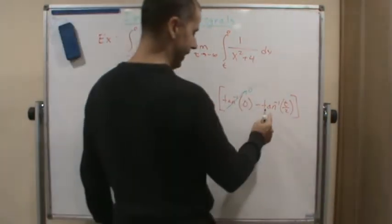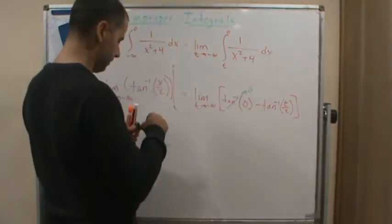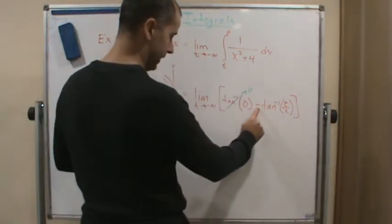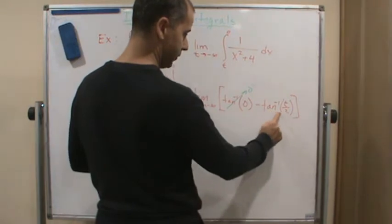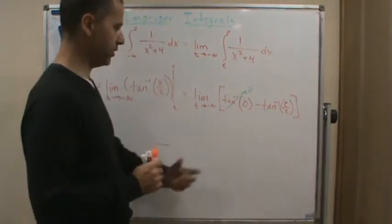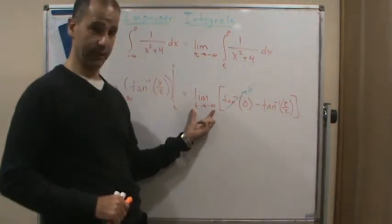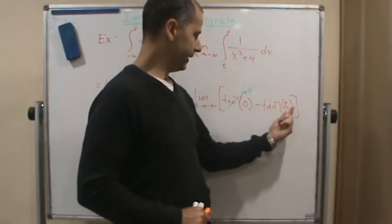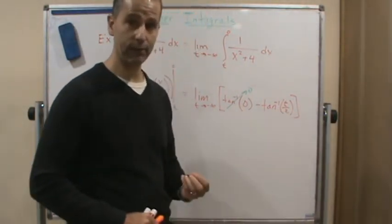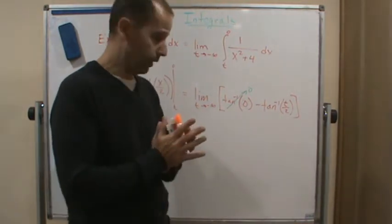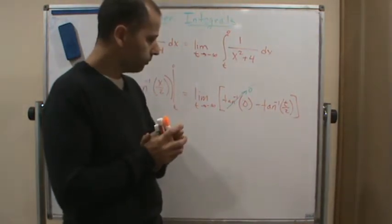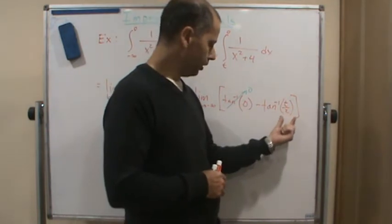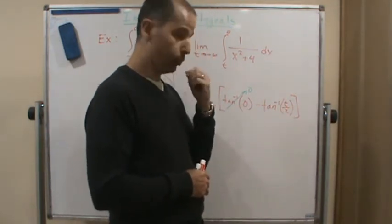Now as we're doing this, we're taking the negative inverse tangent of t over 2. This one is attached to the limit. So what happens to this? This is going to infinity, so we have to ask ourselves: what angle do we approach?